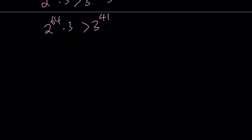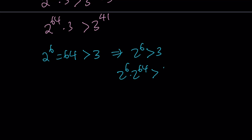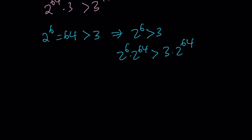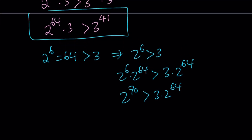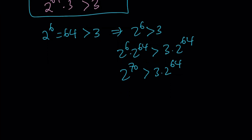Here's my next step. We know that 2 to the power 6 equals 64, and that is greater than 3. So 2 to the power 6 is greater than 3. Now I'm going to multiply both sides of this by 2 to the power 64. So: 2 to the power 6 times 2 to the power 64 is greater than 3 times 2 to the power 64. On the left-hand side, I'm getting 2 to the power 70 — that's what I was looking for. And on the right-hand side, we get 3 times 2 to the power 64, not 3 to the power 41. But we already know that 2 to the power 64 times 3 is greater than 3 to the power 41, so we can write that as another inequality. Bingo — that gives us what we're looking for.